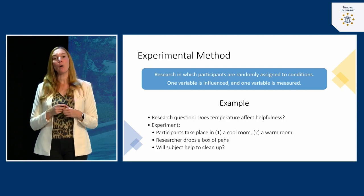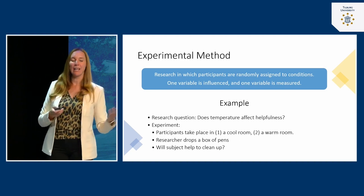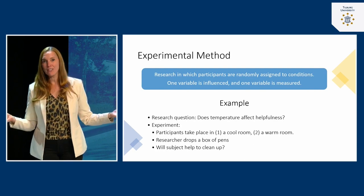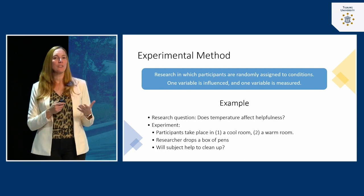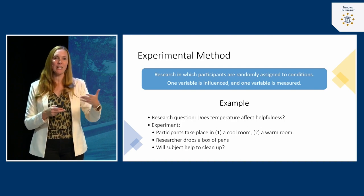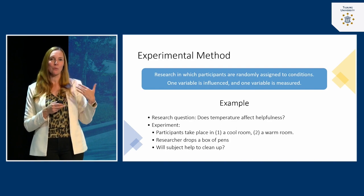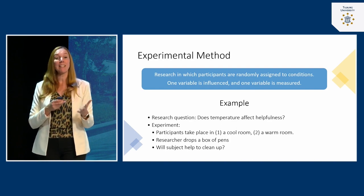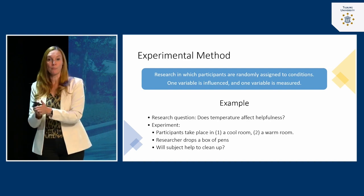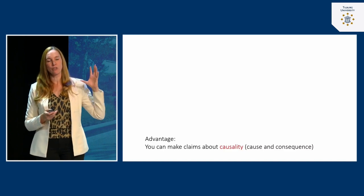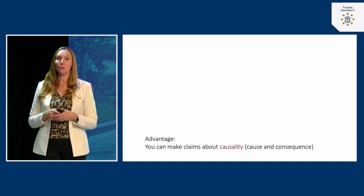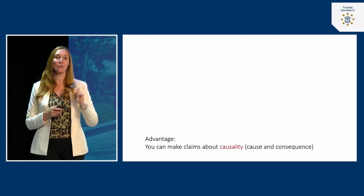You should use random assignments across the groups. To test helpfulness, a researcher enters either the cold or warm room and drops a box of pens. The participant is sitting there, and you check how many pens the participant picks up — whether they help the researcher clean up — and whether there's a difference in helpfulness between the cold and warm room. This is a fake study just for illustrative purposes, but it could be an actual research design.